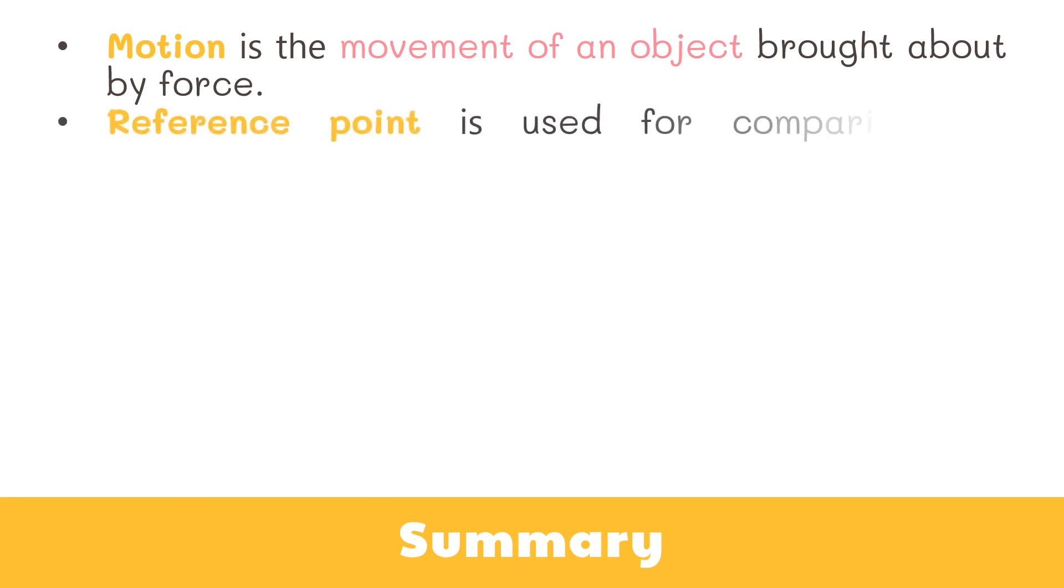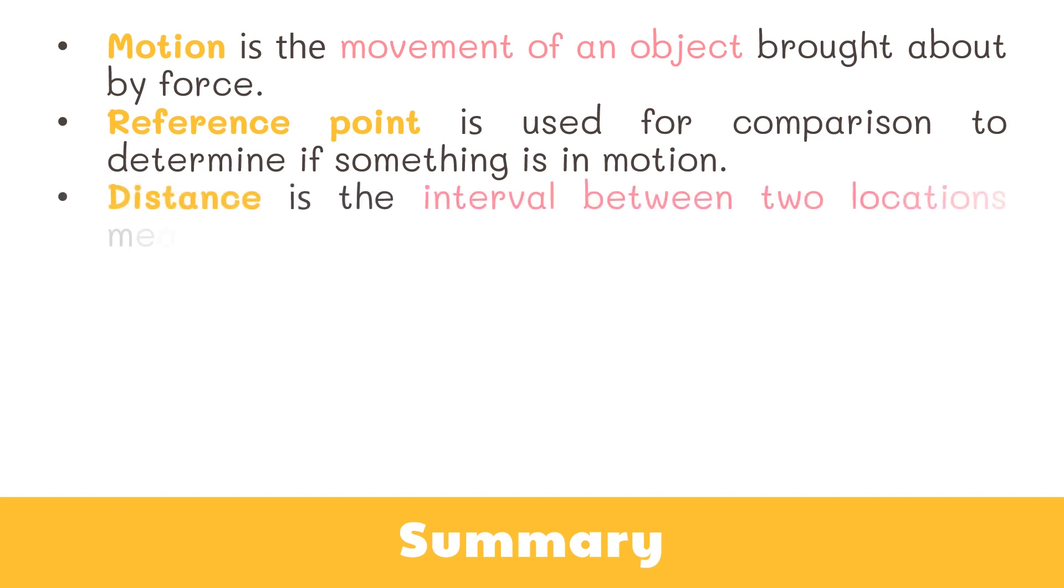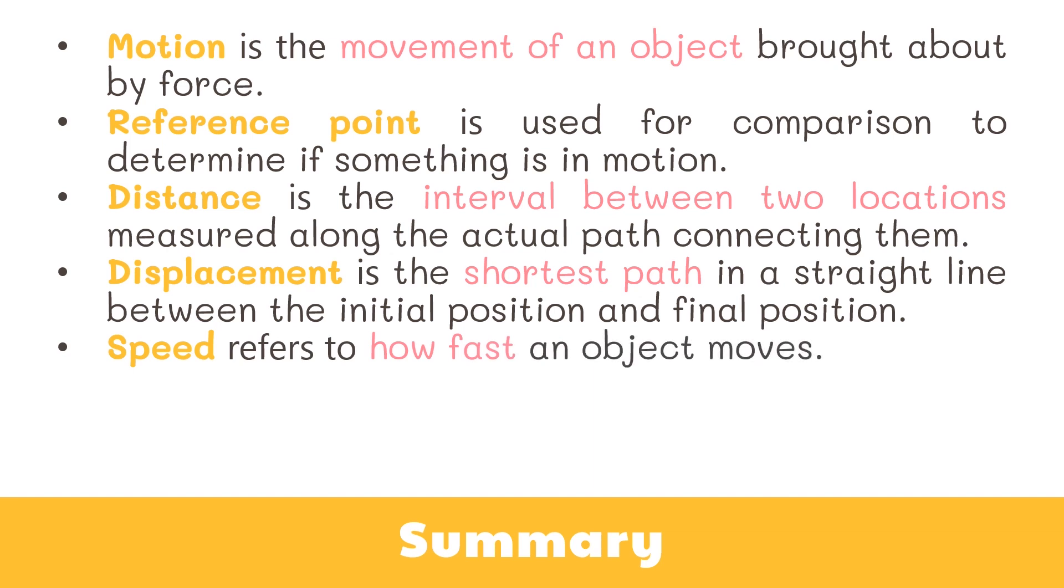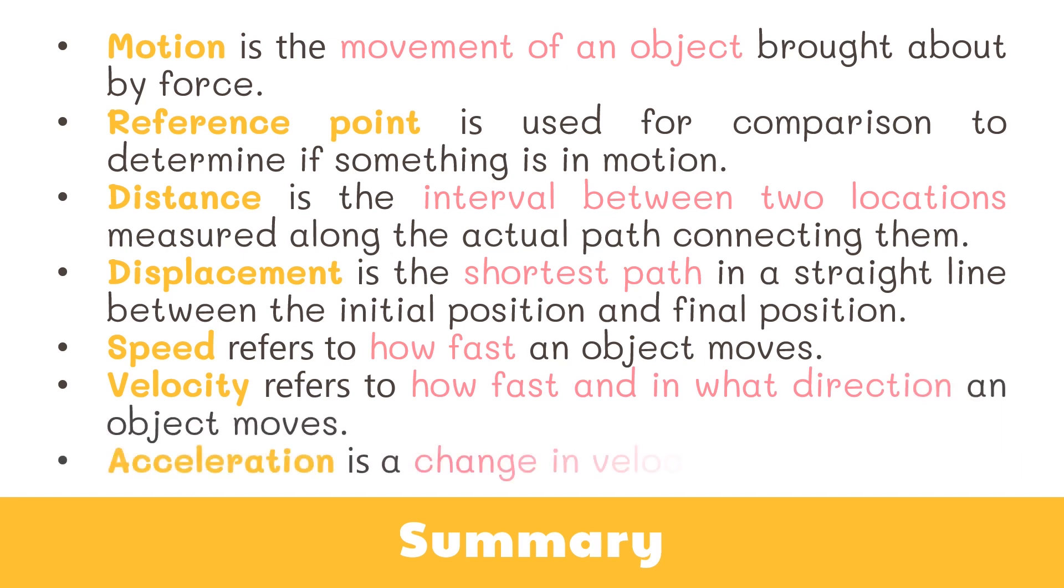Alright, so here's a quick recap. Motion is the movement of an object brought about by force. The reference point is used for comparison to determine if something is in motion. Distance is the interval between two locations measured along the actual path connecting them. Displacement is the shortest path in a straight line between the initial position and final position. Speed refers to how fast an object moves. Velocity refers to how fast and in what direction an object moves. Acceleration is a change in velocity.